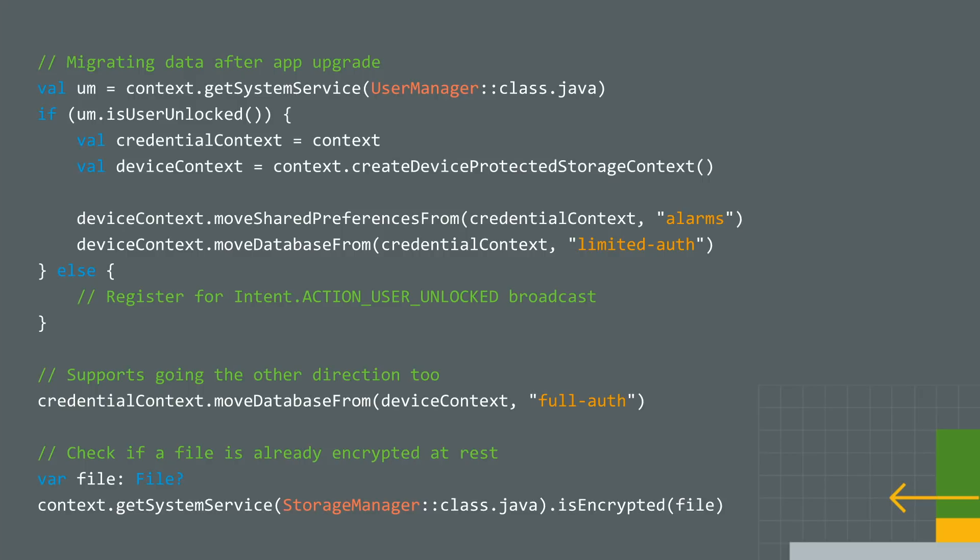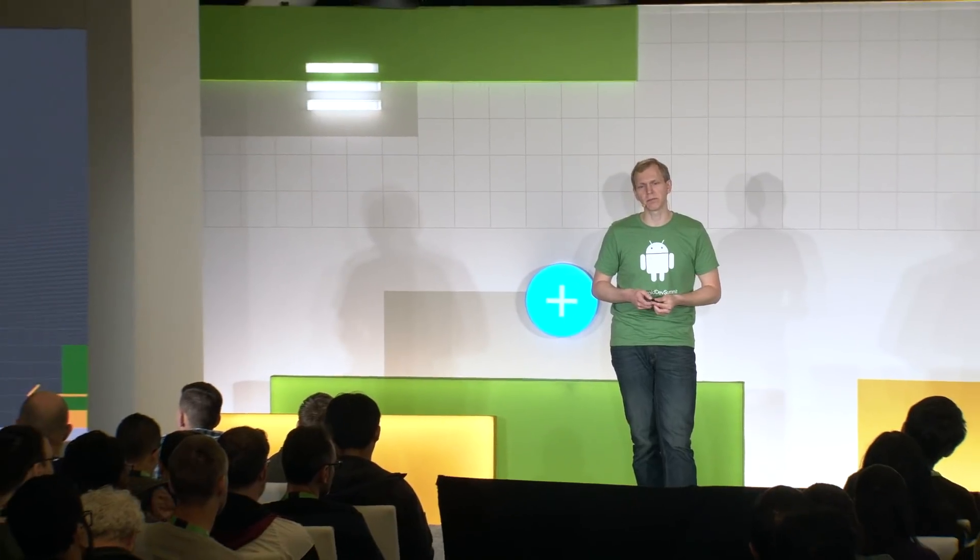There's also a StorageManager isEncrypted API to check if a particular file will be encrypted at rest by the OS. This can be useful when deciding whether to roll your own encryption or rely on the encryption at rest the OS provides.